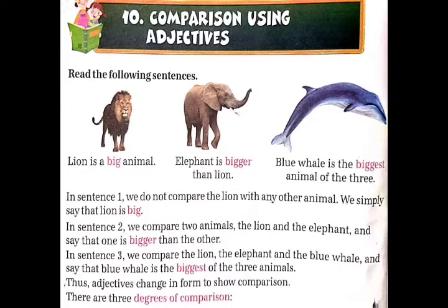In sentence third, we compare the lion, the elephant and the blue whale and say that blue whale is the biggest of the three animals. Third sentence में, हम lion, elephant और blue whale में compare करते हैं. और कहते हैं कि blue whale तीनों animals में सबसे बड़ा है, means biggest है.